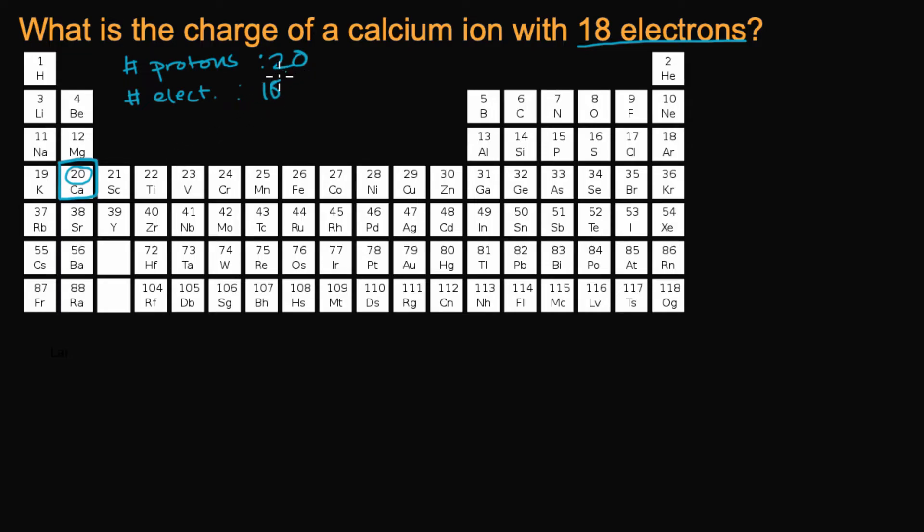So if you want to know the net charge, you take the number of protons, the positive charge, and subtract out the number of electrons. And so that leaves you with positive two charge. 20 minus 18 is positive two. And we will denote that with a two plus.